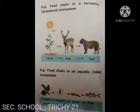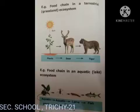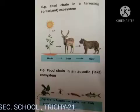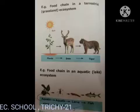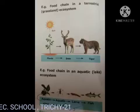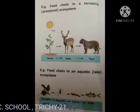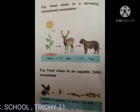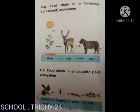Example of a food chain in an aquatic or lake ecosystem: aquatic plants are eaten by aquatic insects, aquatic insects are eaten by larvae, and larvae are eaten by fish.